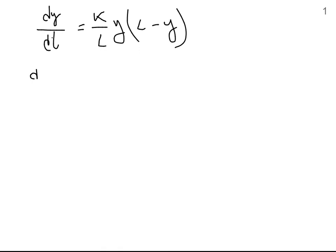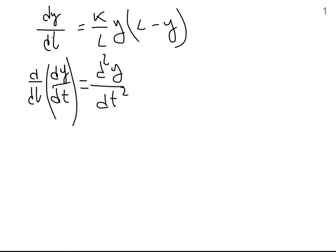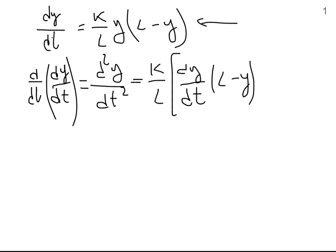Let's start. So d over dt of dy over dt, which we can write as d squared y over dt squared, is equal to — well, we can look at this as a product. So kl is a constant, and then we take the derivative of the first term — this is the implicit part — times l minus y, plus y times the derivative of the second part. And the derivative of the second part is just minus dy over dt.